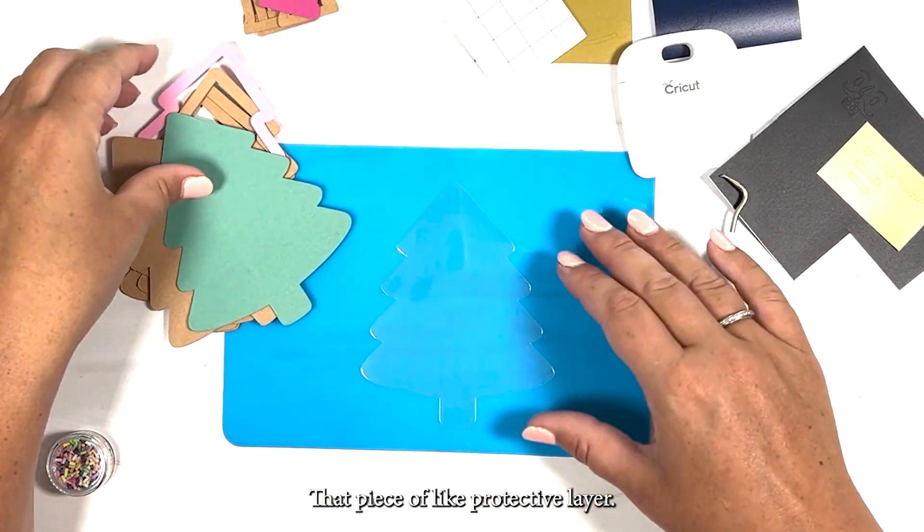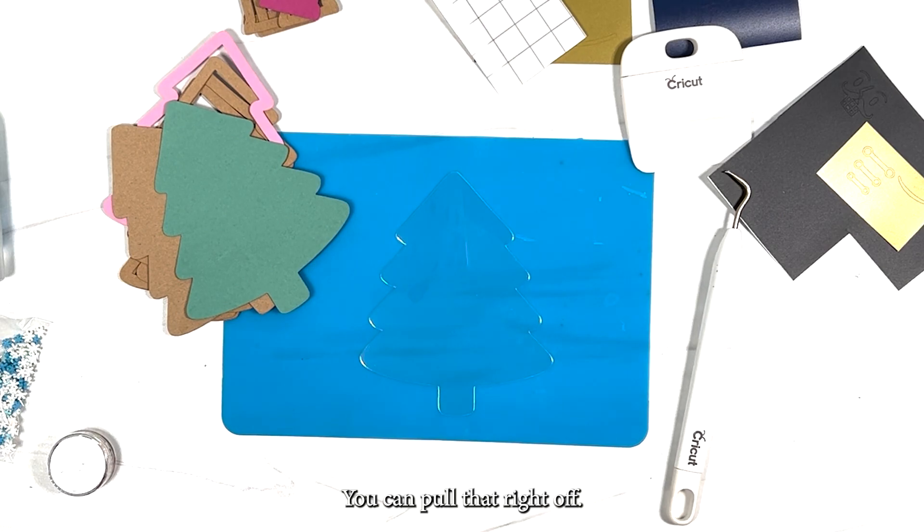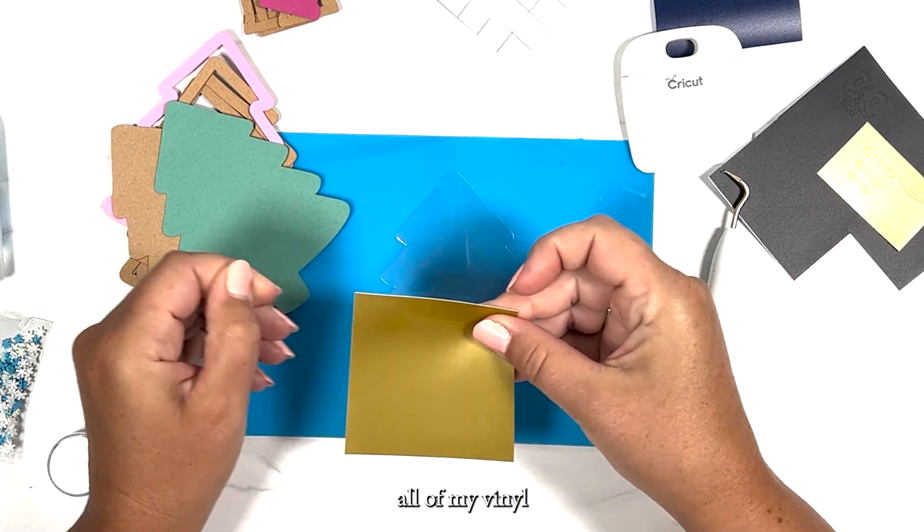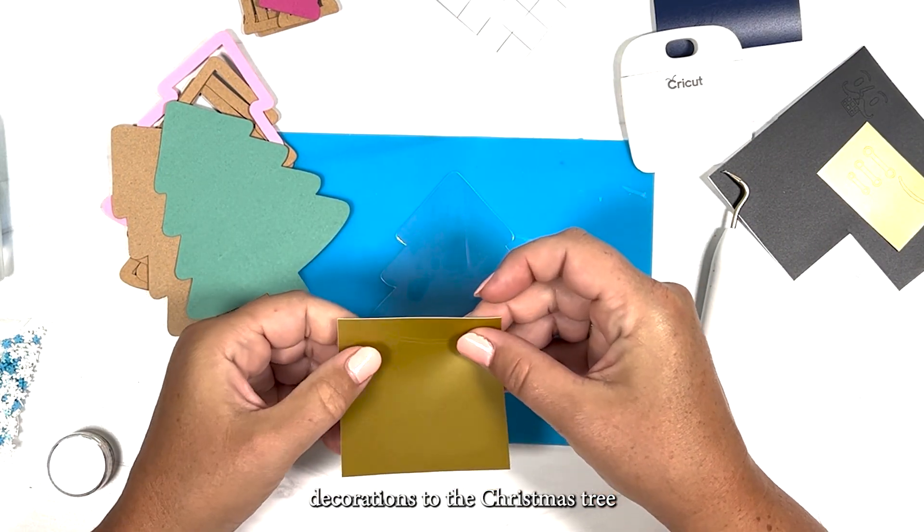That piece of protective layer you can peel that right off and you saw me do that. I just did it on one side because now I'm going to go in and I'm going to add all of my vinyl decorations to the Christmas tree.